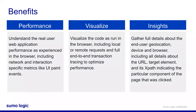The benefits of real user monitoring — RUM — include performance understanding: you can see how the real user is interacting with the browser and application, including UI paint events that show when a user can first view a website versus when they can interact with it. You also get visualization of the code running in the browser, and insights into location, device type, browser type, and what components the user interacted with on the page.